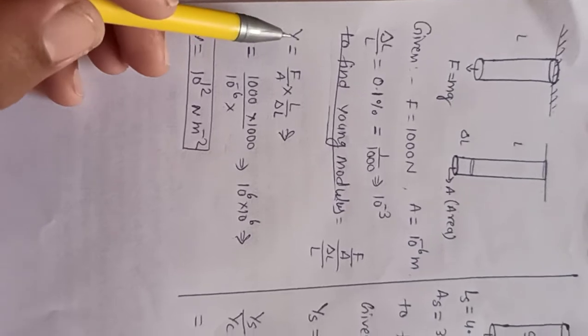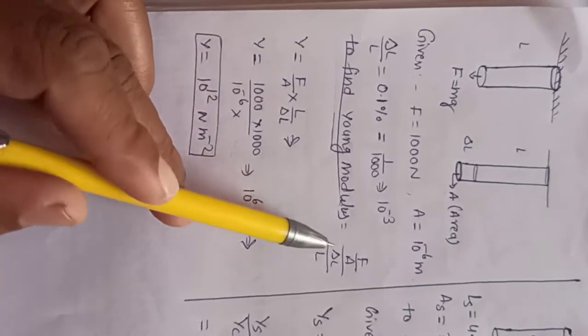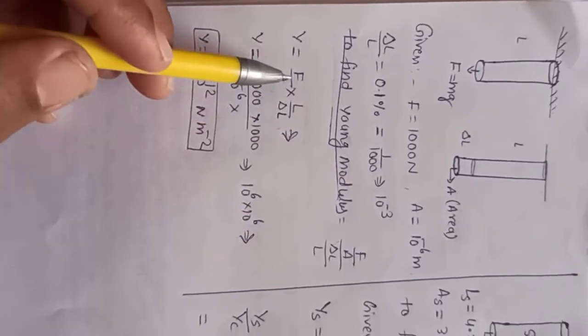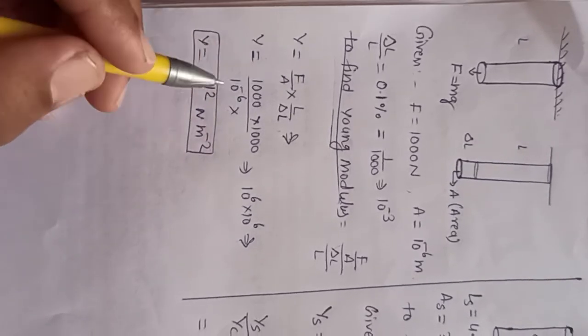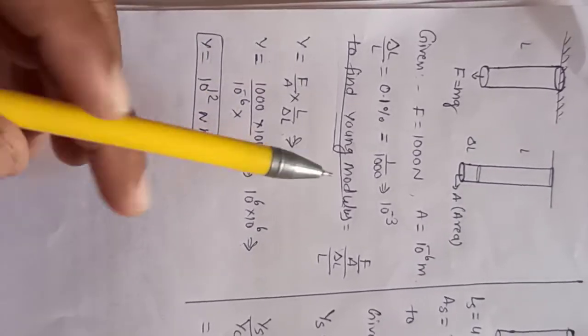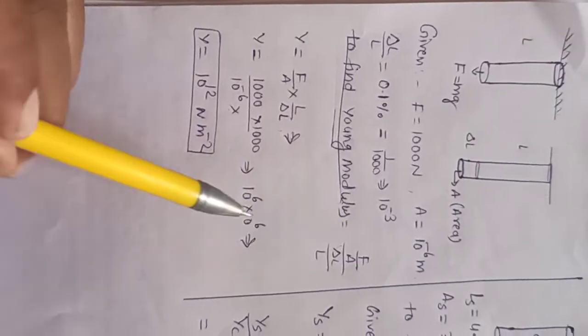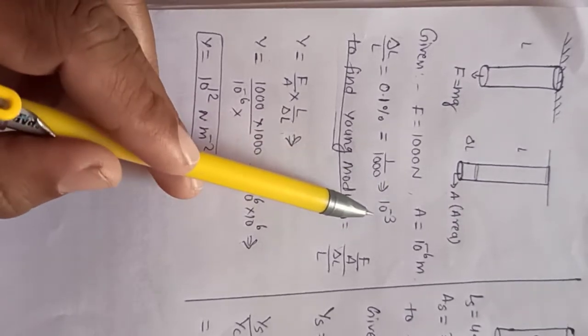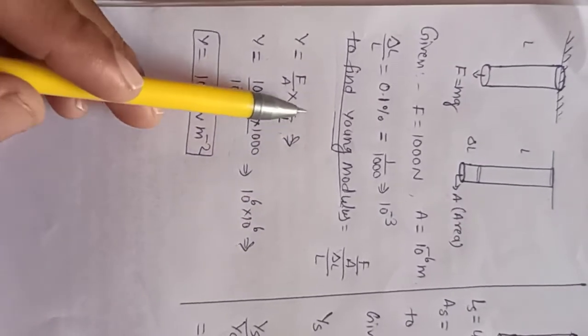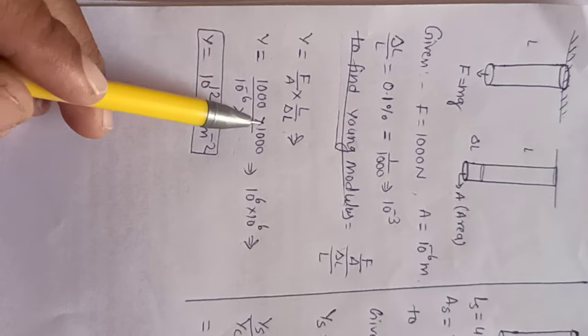Now F/A - the reciprocal will be used. The force is given as 1000 Newton, area is given as 10 to the power minus 6. Now 1% we convert into 1 upon 1000, that means 10 to the power minus 3, so the reciprocal gives us 10 to the power 3.